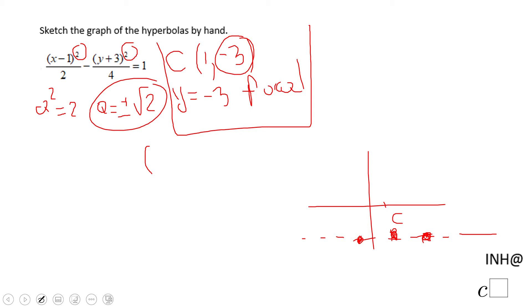so it's going to be (1 - √2, -3) the first vertex, and the second one is going to be (1 + √2, -3). All right, these are the two vertices.